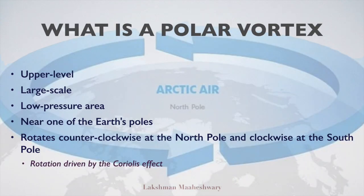So what exactly is a polar vortex? It is an upper level, large scale, low pressure area lying near one of the Earth's poles. There are two polar vortices in the Earth's atmosphere overlaying the north and the south pole. The polar vortex rotates counterclockwise at the north pole and clockwise at the south pole, so both polar vortices rotate eastward around the poles.